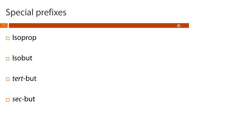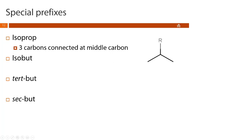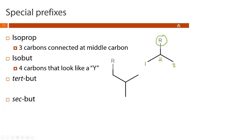In addition to the first 10 IUPAC prefixes, there are four special prefixes to know. The first is isoprop: a three-carbon group connected at the middle carbon. The second is isobut: four carbons in a Y-shape — essentially isoprop plus one more carbon — connected to the parent chain.